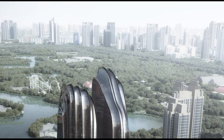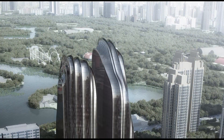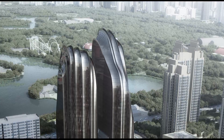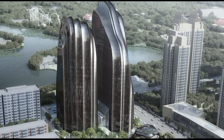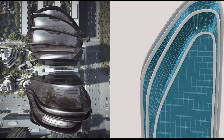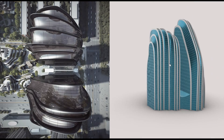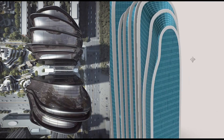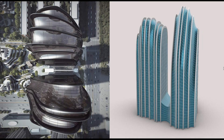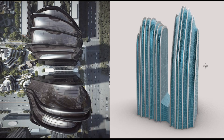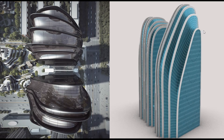Welcome to this tutorial on modeling Choang Park Plaza in Rhino using Sub-D modeling techniques. We will begin by setting up a reference picture of the building, then use Sub-D modeling, and finally use Grasshopper to create panels for our model. Even if you aren't into Rhino, you will find this tutorial easy to follow and packed with useful tips. Grab your copy of Rhino and let's get started!